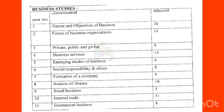You will see what is hidden in the importance of business. I will talk about the 10th chapter of nature and objectives of business, sources of finance, private, public and global, and formation of a company. I will talk about the 10th chapter of social responsibility. I will talk about the 6th chapter of emerging modes of business. I will talk about the 5th chapter of small business.